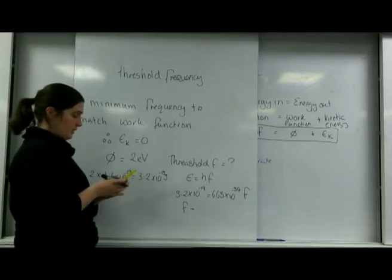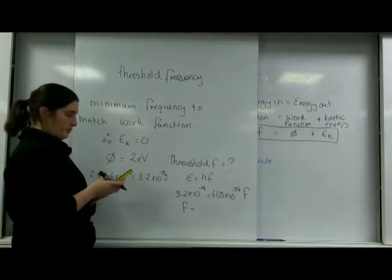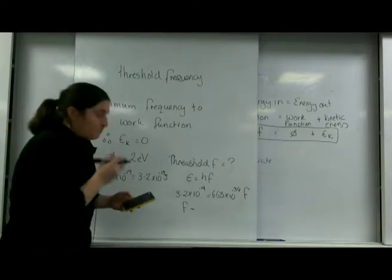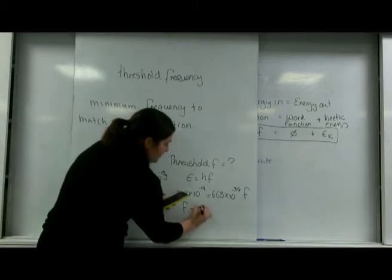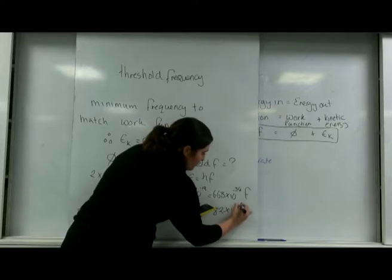So 3.2 times 10 to the minus 19 divided by 6.63 times 10 to the minus 34. It's 4.82 times 10 to the 14 Hertz.